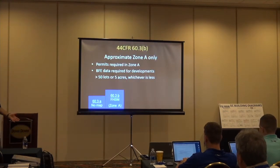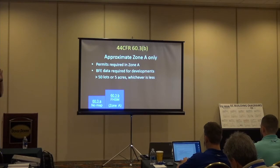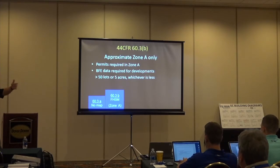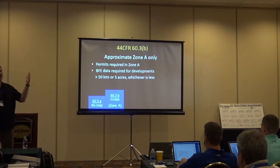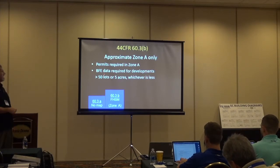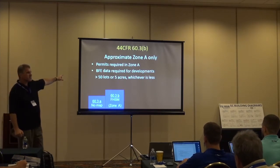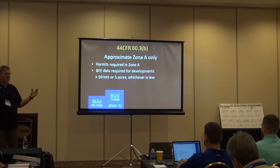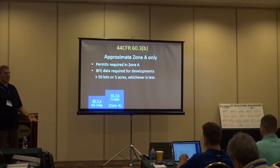My next step — I'm going to approximate A zones only. I require a permit now. You've got to have a permit if you want to build here. And I'm going to require the developer or contractor to provide me with base flood elevations. I don't have a map, but I'm going to require you to tell me what you're going to build at. My dividing parameter — commit this to memory because it's not written down anywhere — is 50 lots or five acres, whichever is less.